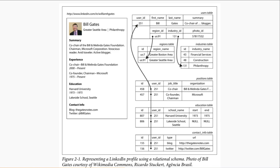There's actually a mistake in this particular diagram. Industry ID should not be in the users table. There should be a separate associative table with user ID and industry ID, and then a separate industries table with a list of industries. You can see this because the person has two positions in two different industries — philanthropy and software. They should have two industry entries, so we want to partition that out into a separate table.